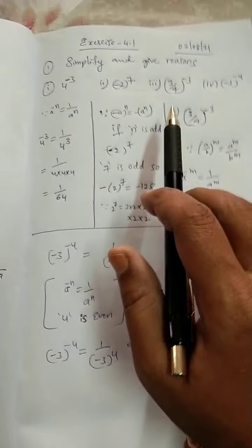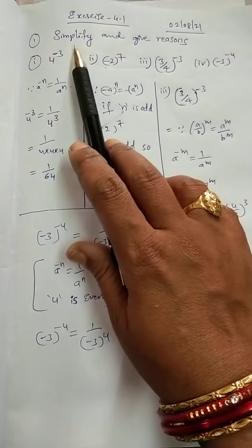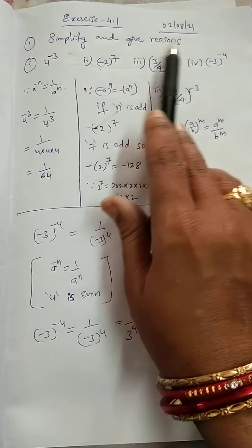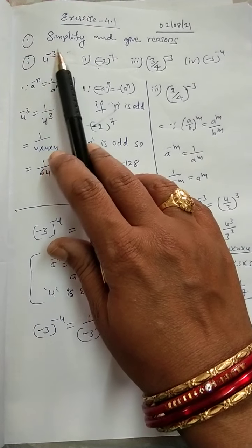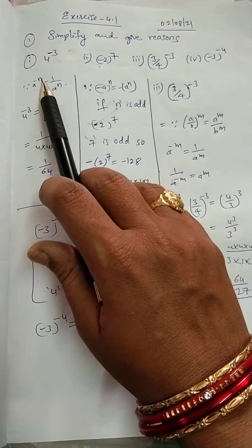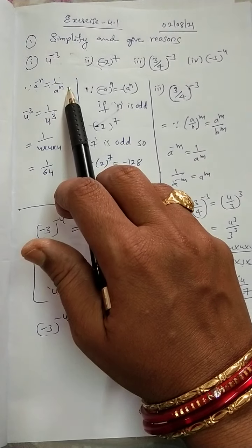Next, based on that few sums, first question, simplify and give reasons. 4 power minus 3. So, it is in the form of A power minus N is equal to 1 by A power N.